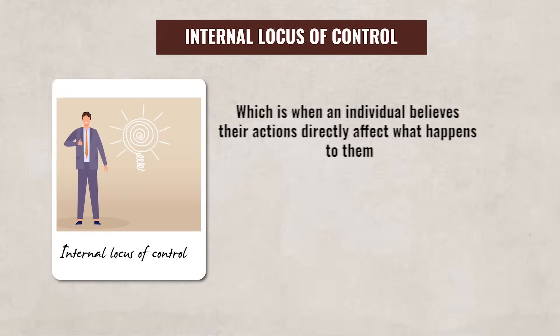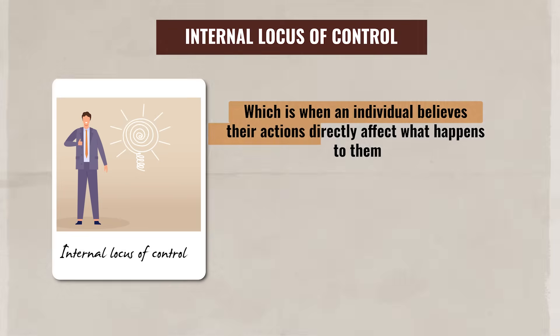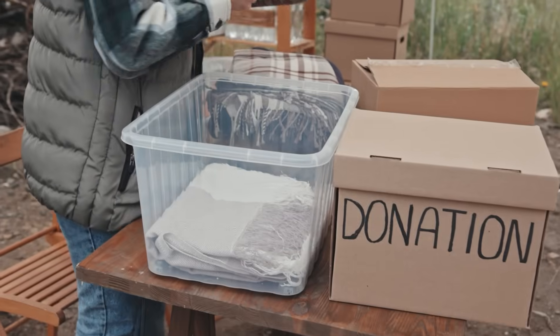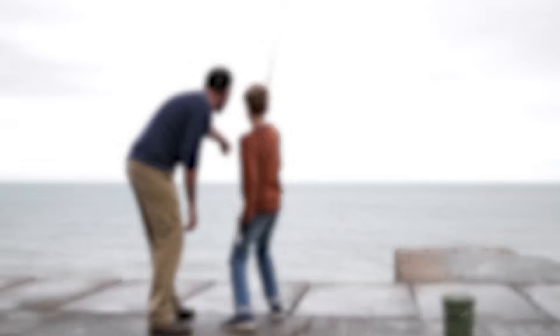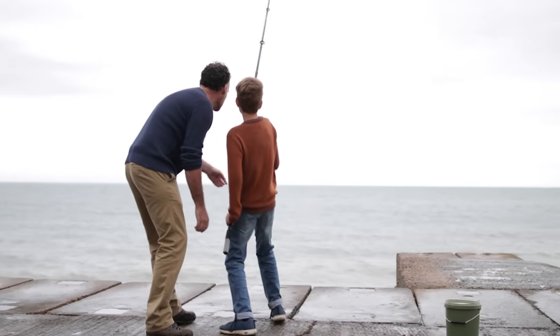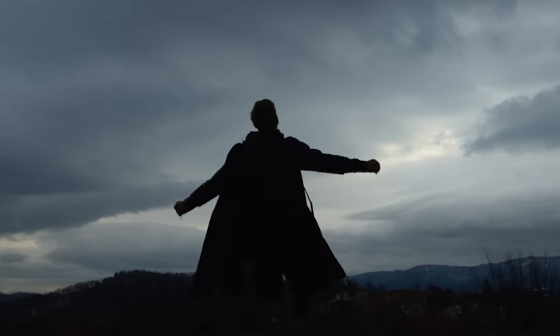On the other hand, individuals can also have an internal locus of control, which is when an individual believes their actions directly affect what happens to them. This can result in the individual taking more initiative in life, since they believe that their effort will change the outcome. Even if an individual comes across challenges or setbacks, they'll be more likely to keep putting effort in, since they believe it will pay off. If the outcome is negative, individuals will generally take responsibility and try to figure out what went wrong so they can improve for next time. Individuals with a high internal locus of control also tend to have higher self-efficacy and reduced feelings of helplessness.